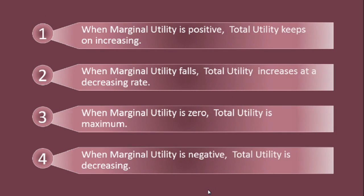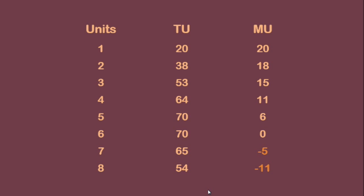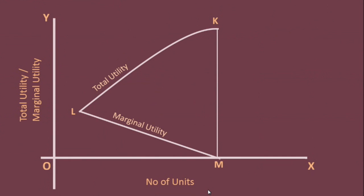Fourth relation: when marginal utility is negative, total utility is decreasing. For the 7th and 8th units of apple, marginal utility becomes negative, and total utility falls. Refer the graph: the marginal utility curve goes below the x-axis beyond the mth unit, meaning marginal utility turns negative. Corresponding to this, total utility falls.